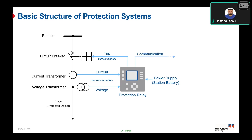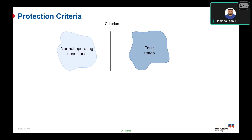Operation can also occur within the same substation or between substations using an automation communication system such as the SCADA communication system. Now we will talk about the protection criteria — how to distinguish between the normal operating state and the fault state.